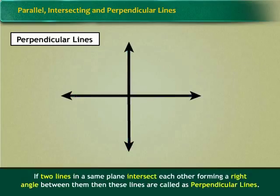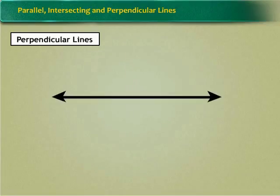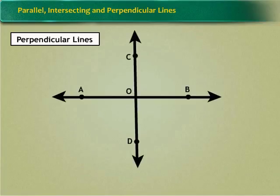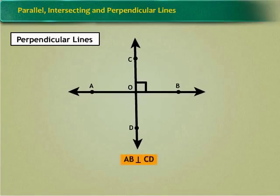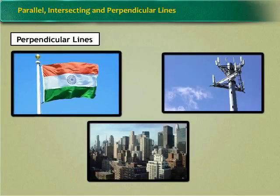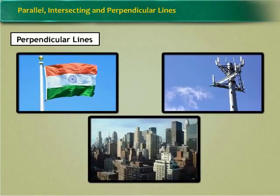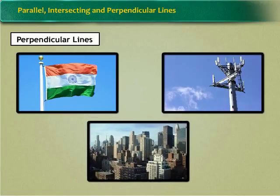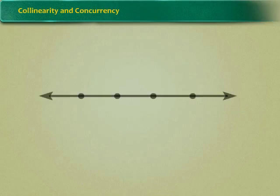Now, if two lines in a same plane intersect each other forming a right angle between them, then these lines are called as perpendicular lines. In the figure, we see that line AB is intersecting line CD at O forming angle of 90 degree between them. It can be written as AB perpendicular to CD. Examples of perpendicular lines are flag posts, cell phone tower, tall buildings are all perpendicular to the floor, etc.